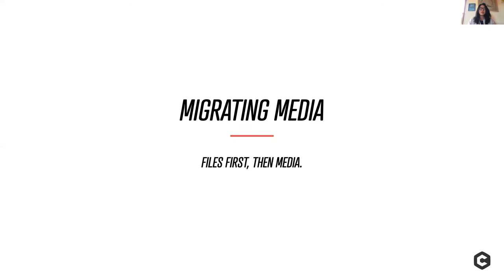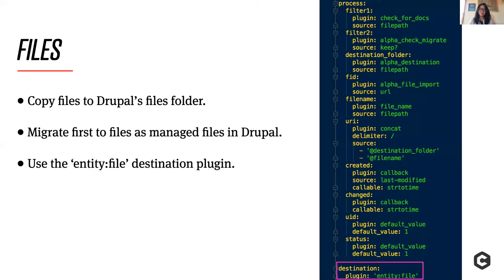When you first start approaching how to migrate media, the advice across the board is: you need to migrate your files first, and then once you do that, generate the media entities. The first order of business is to get all your source files into the managed file system. You can do that with a ready-to-go destination plugin called entity:file. Here's a sample migration YAML file for a file migration that will get all your files into Drupal.